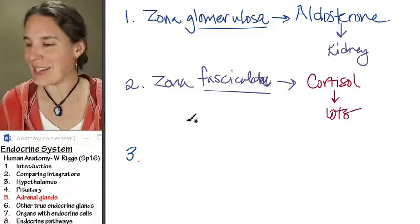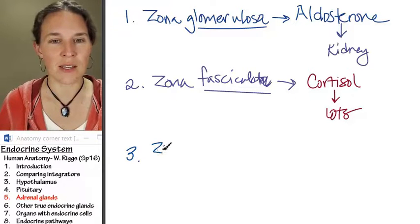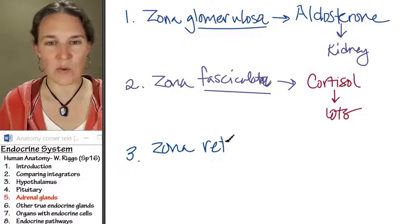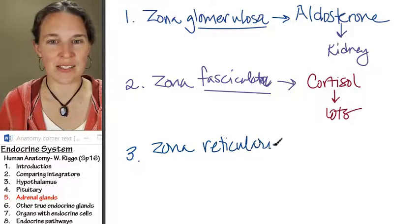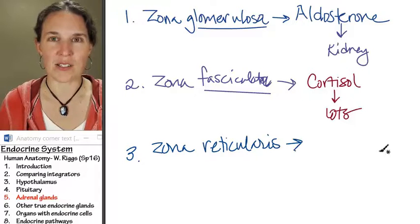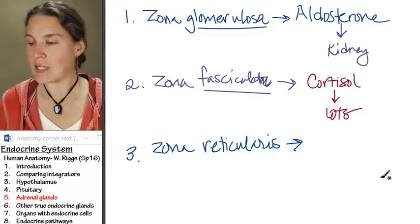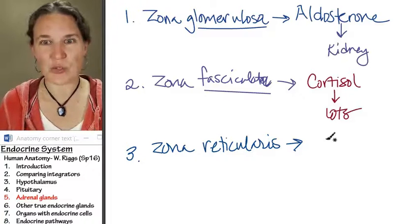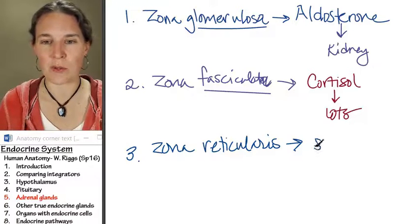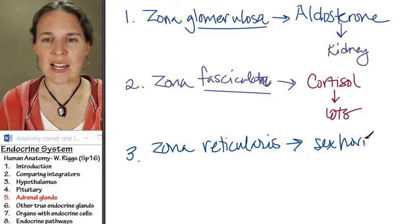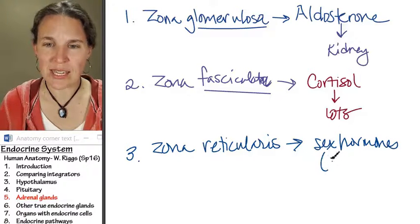And my third layer is called, oh, lordy, zona reticularis. Reticularis. But, of course, another reticular something. Zona reticularis is the deepest one, and it's producing sex hormones. And it's actually mostly androgens.